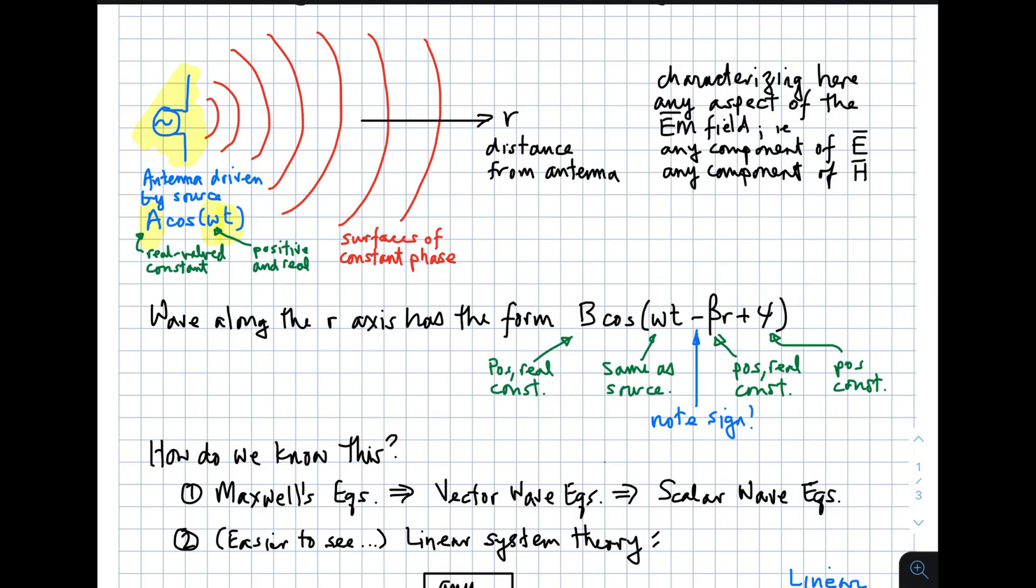The antenna is driven by the sinusoidal source. In response, the antenna creates a wave. That wave travels outward away from the antenna. The red lines here are surfaces of constant phase, and here I'm showing increasing distance from the antenna as the variable little r. Just as it does not matter whether the antenna is driven by a current or a voltage, it also does not matter what I'm assuming as my metric for measuring the electromagnetic field. The analysis here applies to the electric field intensity, magnetic field intensity, any one component of those things. Everything I'm about to say here is general to all of that.